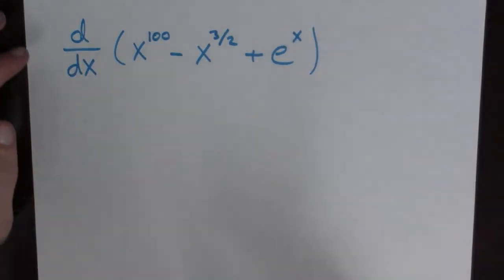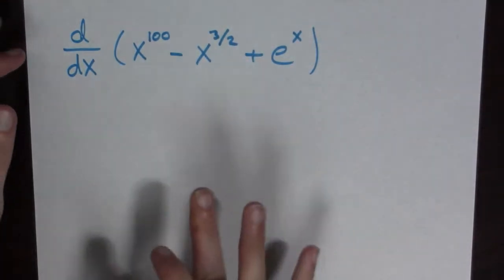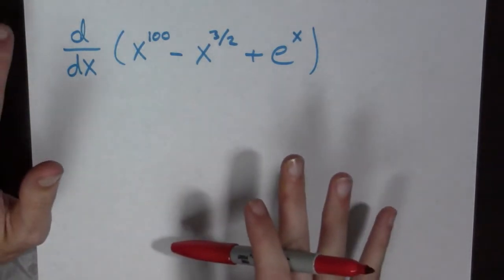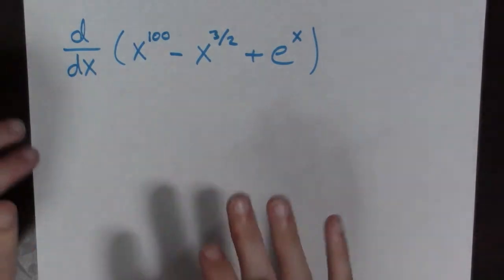Here's the next question. It's the derivative with respect to x of x^100 - x^(3/2) + e^x. Take a second to write it down. Don't do it. You got it written down? Okay.